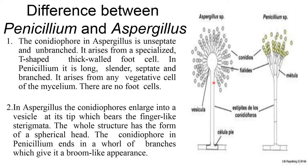The Aspergillus conidiophore arises from a specialized T-shaped, thick-walled foot cell. Whereas in Penicillium, it is long, slender, and septate — here you can see there is a septum — and it is branched. It arises from any vegetative cells of the mycelium, so there is no foot cell.